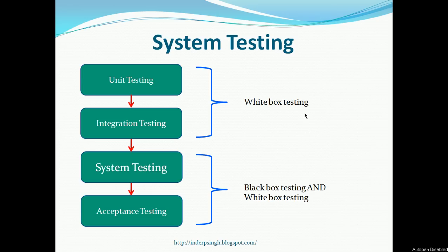Now, if you look at the levels of testing, you will see that we have unit testing, integration testing, system testing, and acceptance testing. If you are following the Waterfall SDLC, the Software Development Life Cycle, then these testing levels are conducted sequentially. If it is the Agile Software Development Life Cycle that you follow, then these testing levels can be in parallel for different parts of the software.